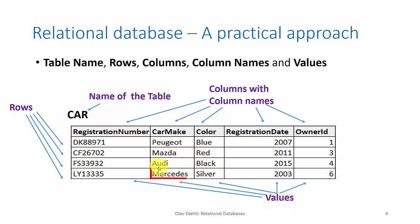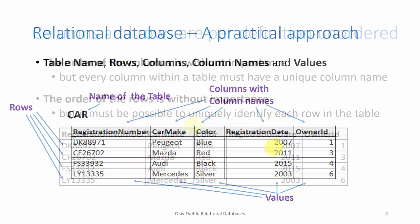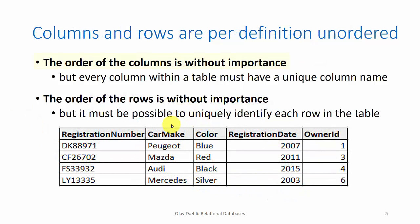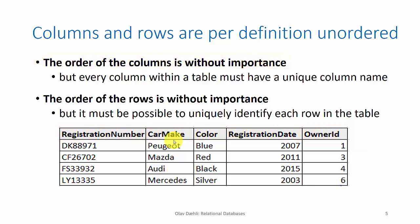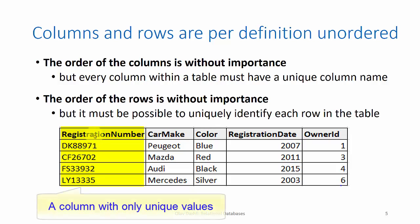For instance, Mercedes, blue, and 2007 are all values. The order of the rows and columns are of no importance. The way the columns are separated from each other is by giving them unique column names. And the way to separate the rows from each other is to introduce a unique identifier that is able to uniquely identify each and every row in the table.